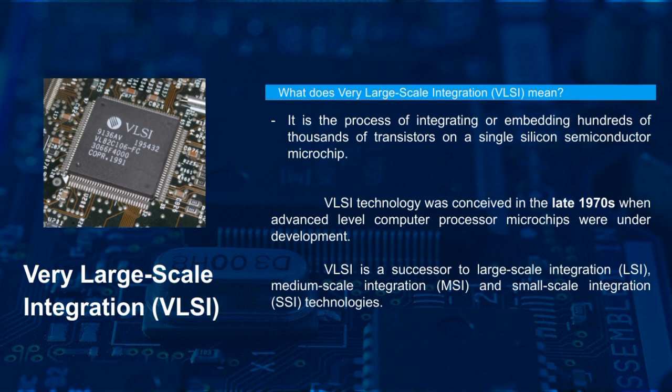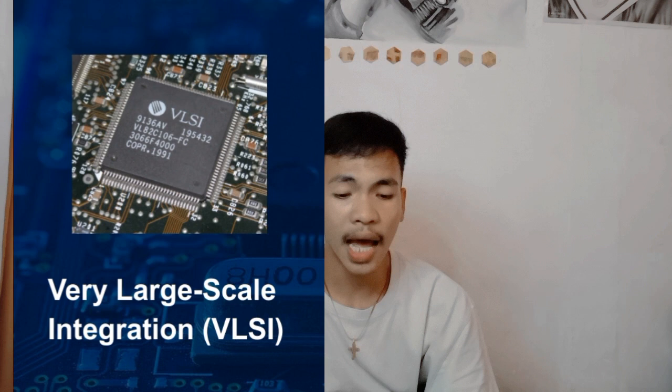VLSI was initially designed to support hundreds of thousands of transistors' gates on a microchip, which as of 2012 exceeded several billion. All of these transistors are remarkably integrated and embedded within a microchip that has shrunk over time but still has the capacity to hold enormous amounts of transistors.